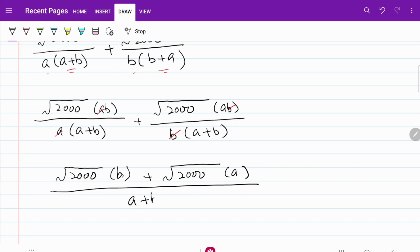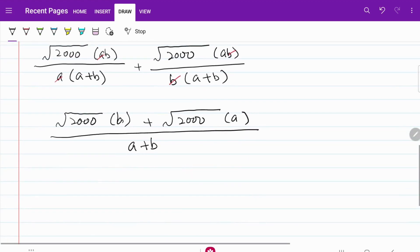From here, if you look at the numerator, I can isolate a plus b. And then the common term which is square root of 2000 divided by a plus b. So this term and this term will cancel.